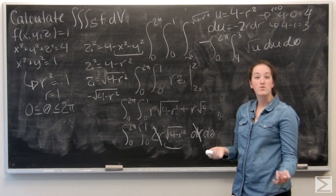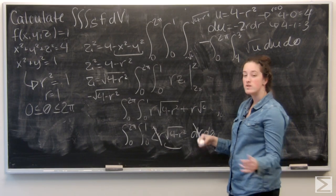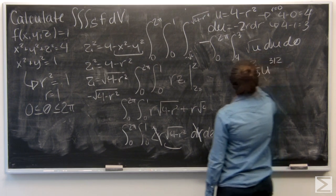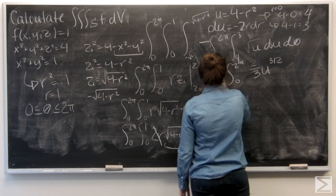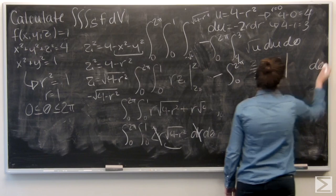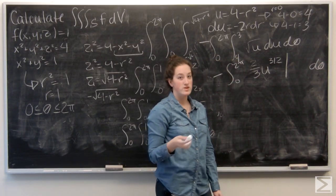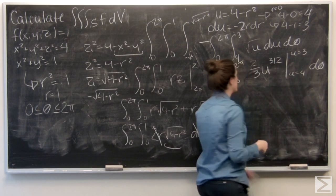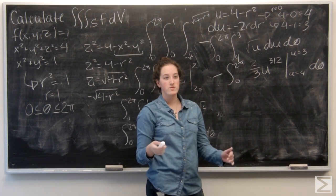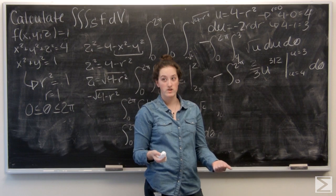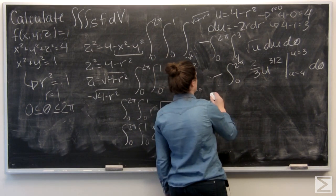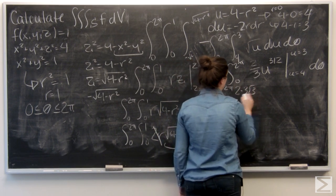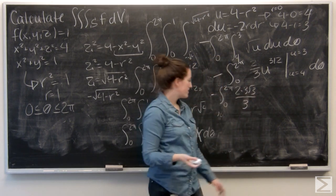So the square root of u is like u to the 1 half. So when I integrate that, I'll get 2 thirds u to the 3 halves. And I'm evaluating that from u equals 4 to u equals 3. So let's do 3 first. 3 to the 3 halves is like the square root of 3 to the third, so 3 root of 3. And immediately something cancels out. So let me go ahead and rewrite that.